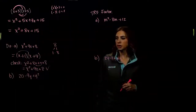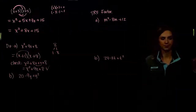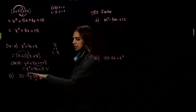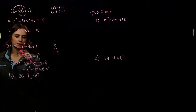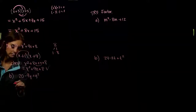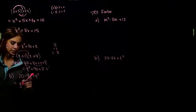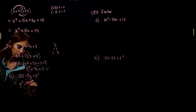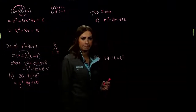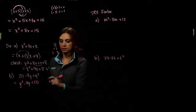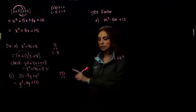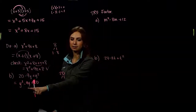For the next one, we're in a wonky order — we need descending order. So we rewrite as y squared minus 9y plus 20. We need factors of 20 that multiply to 20 but add to negative 9. Trying 1 and 20 — adding gives 21, too big. Trying 2 and 10 — adding gives 12, subtracting gives 8, but we need 9. 4 and 5: they add to 9, which works.